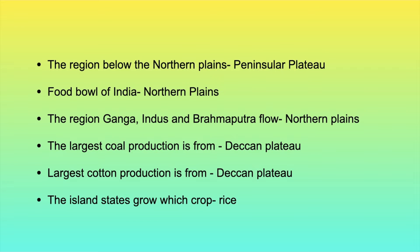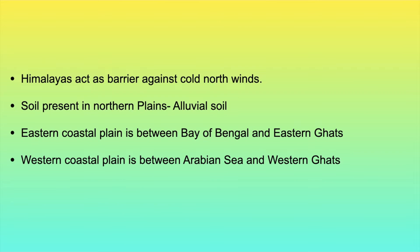The island states grow rice. The Himalayas act as a barrier against north winds. Soil present in the northern plains is called alluvial soil. The eastern coastal plain is between the Bay of Bengal and the Eastern Ghats. The western coastal plain is between the Arabian Sea and the Western Ghats.